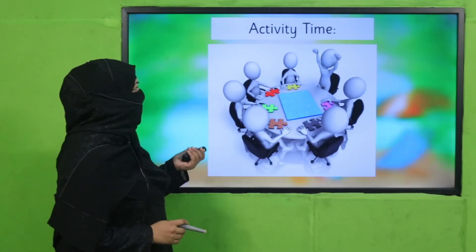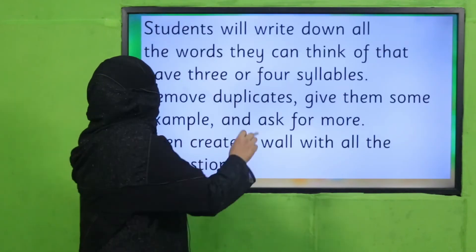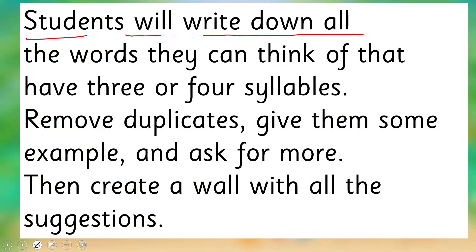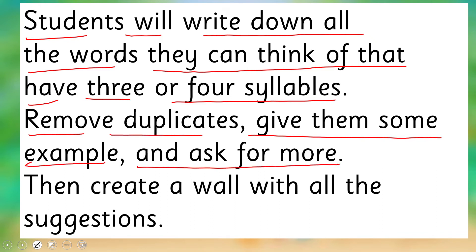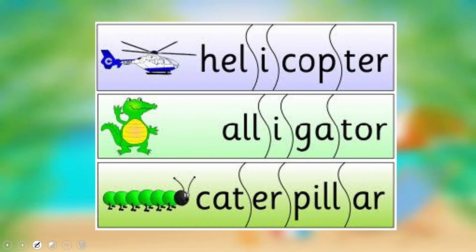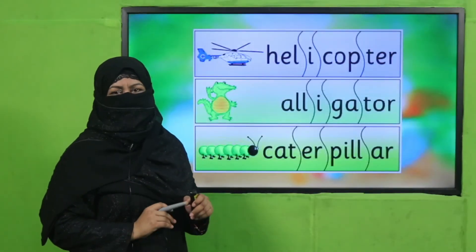Let's practice through an interesting activity. Students will write down all the words they can think of that have three or four syllables. Think and make a list. The teacher will find duplicates, remove them, give some examples, and ask for more. Then create a word wall with all the suggestions. With the remaining words, you can make a syllable wall. Pause the video, enjoy the activity, and then come back.